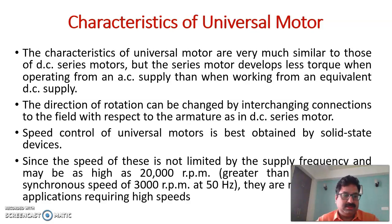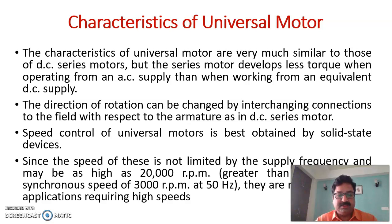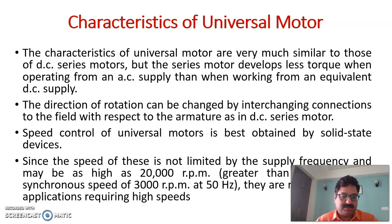The torque value is less, and the direction of rotation can also be changed by interchanging the connections to the field with respect to the armature, as in the DC series motor. For speed control, the universal motor is best controlled by solid-state devices — electronic converters are most preferred. The speed of this motor is not limited as in conventional motors; it can reach very high speeds up to 20,000 RPM, much higher compared to the synchronous speed of 3,000 RPM for 50 Hz. They are mostly suitable for regulating high speed.